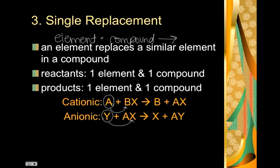How do you know what's what? Well, if you have a cationic single replacement, this guy is a metal. And if you have an anionic single replacement, this guy is a nonmetal. A cation in this case would be a metal, and in this case an anion would be a nonmetal.